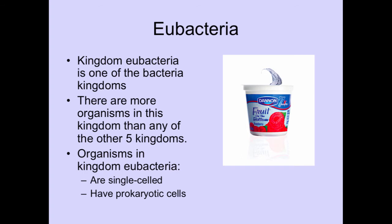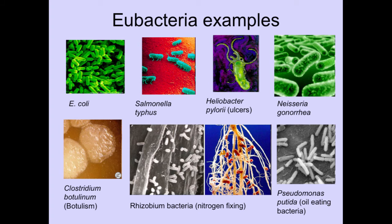Let's get to eubacteria. The kingdom Eubacteria is one of the bacteria kingdoms, and there are more organisms in this kingdom than in all the other five put together. Organisms in this kingdom must be unicellular and prokaryotic, meaning they lack a nucleus. This includes good and bad bacteria — healthy bacteria found in yogurt is a good example of eubacteria, but there are also E. coli, salmonella, helobacter which causes ulcers, gonorrhea, botulism which is like Botox, nitrogen-fixing bacteria that is important to plants in the nitrogen cycle, and oil-eating bacteria.